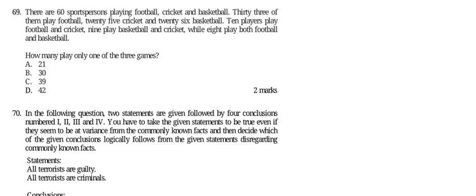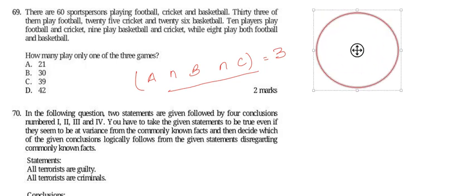Question 69: there are 60 sports persons among football, cricket, and basketball. 33 play football, 25 play cricket, and 26 play basketball. 10 players play both football and cricket, 9 play both basketball and cricket, and 8 play both football and basketball. Using the basic set formula, let A be football, B be cricket, and C be basketball. The intersection of all three is found to be 3.